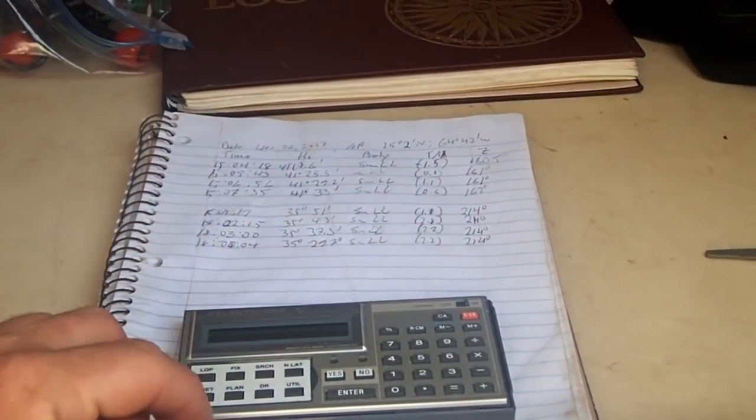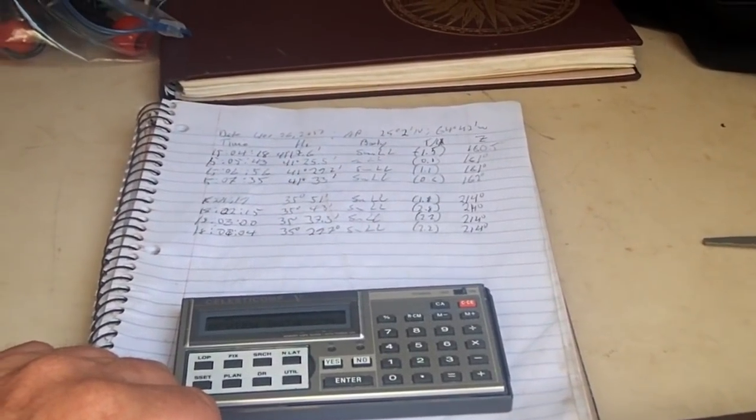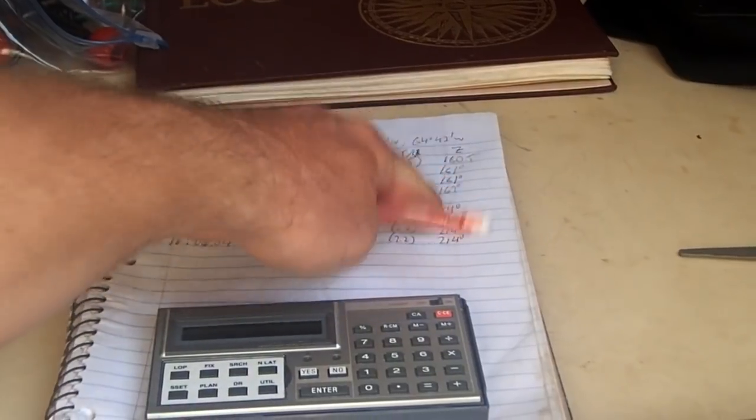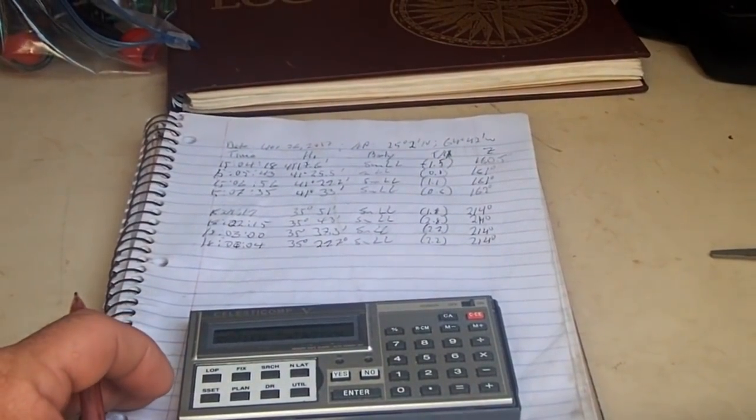All right, so now, what we can do is, we have two sets of LOPs, and the latter set are at a pretty good angle to the earlier set, so we can compute a running sun fix.